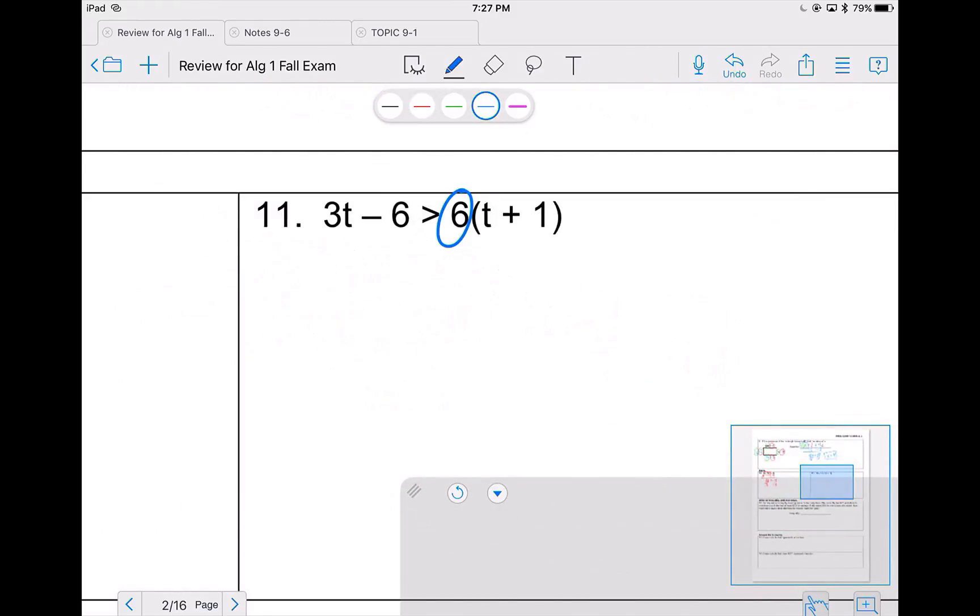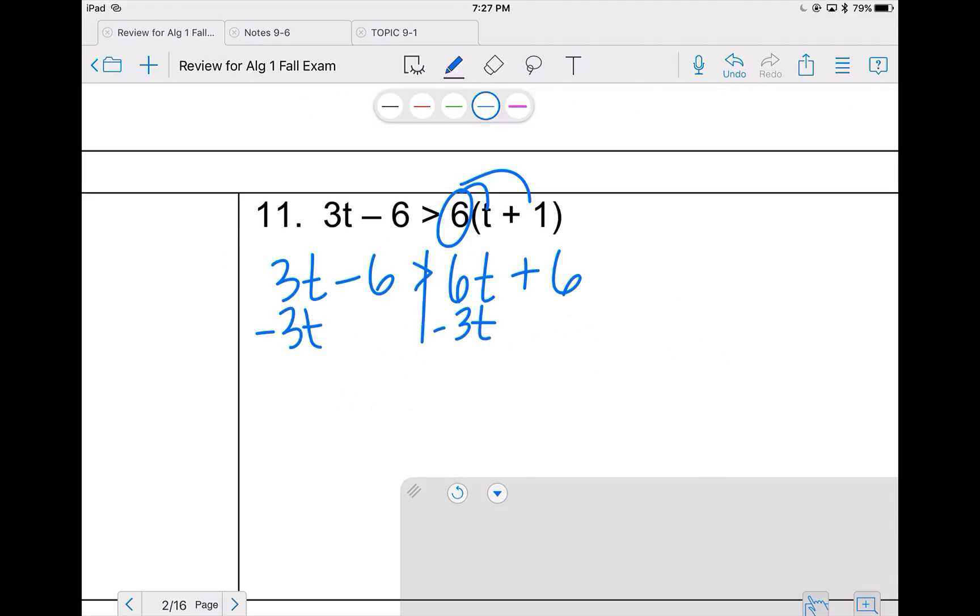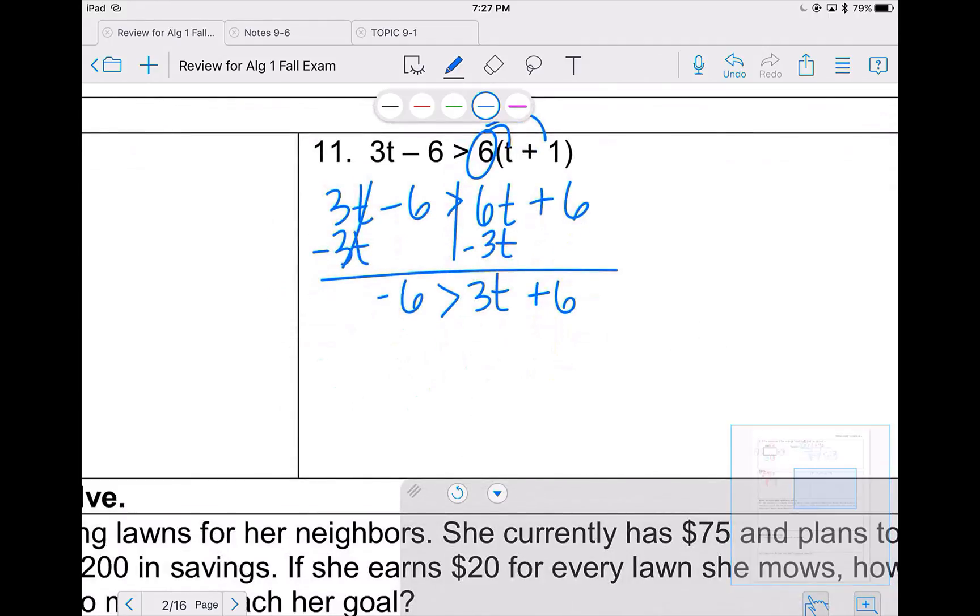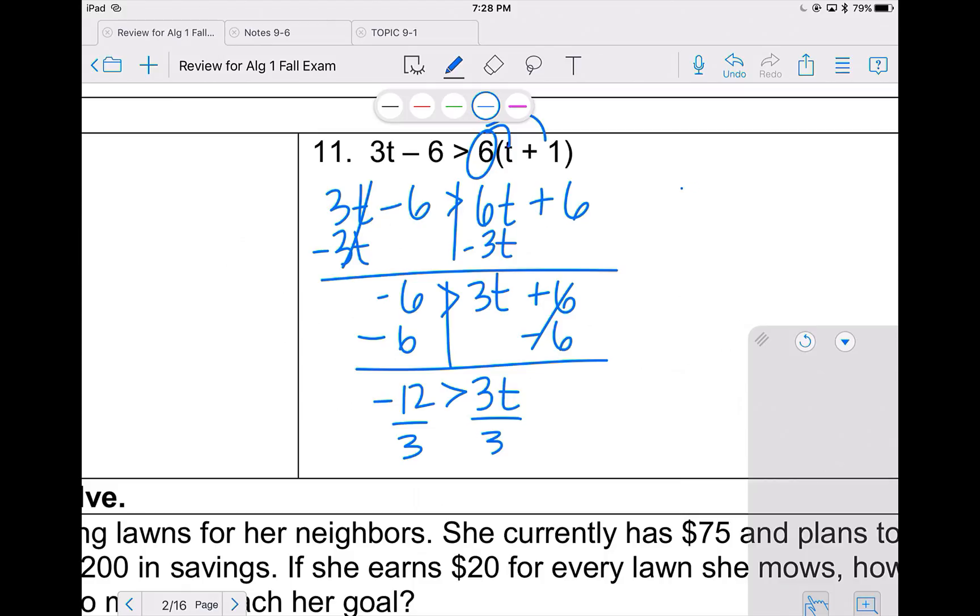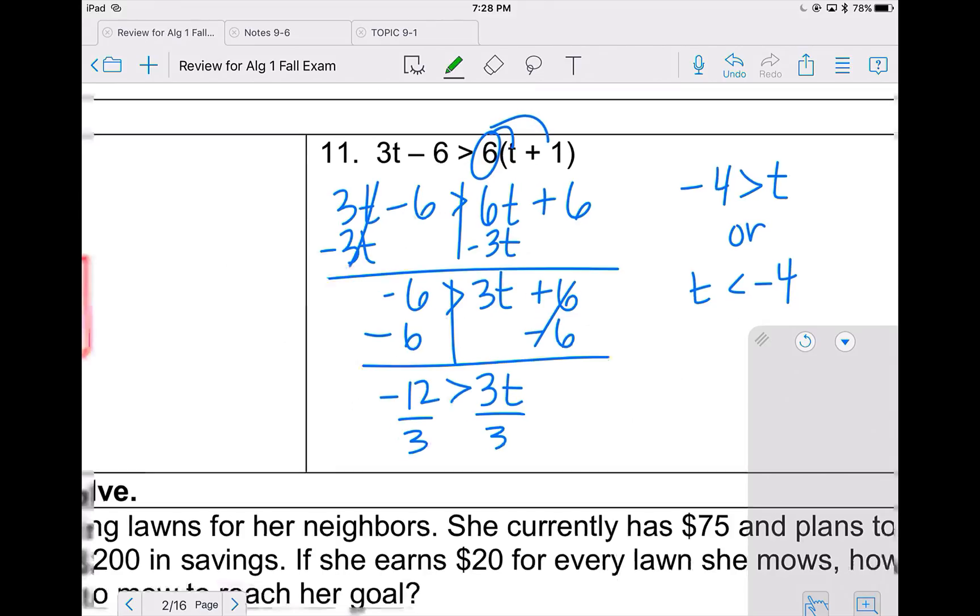Problem 11. In order to solve, we need to distribute 6 times t and 6 times 1. I'm going to move the 3t to the other side because it's smaller. So I'm following the same steps as I did on the front. The only difference is if you divide by a negative, you have to flip your sign. I'm moving this 6 with t onto the other side. And note that negative 6 minus 6 is negative 12. Those do not cancel. I divide by 3. And because I divided by a positive, my sign will stay the same. So negative 4 is greater than t. Or you could also write it t is less than negative 4. Note that when I rewrote it, I didn't flip my sign. I flipped the entire inequality. I switched the entire inequality.